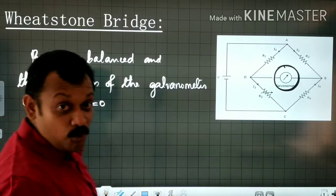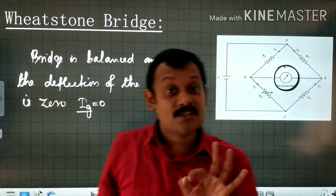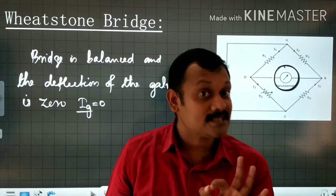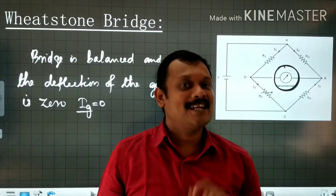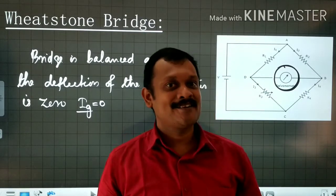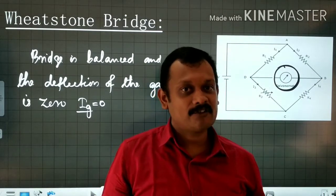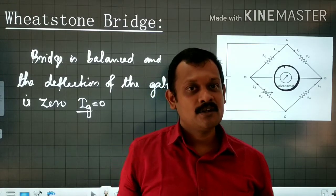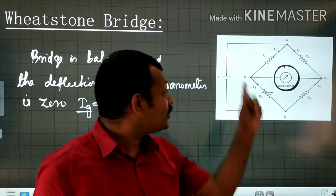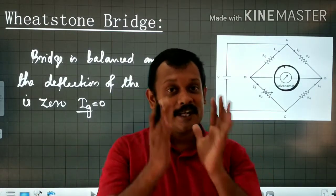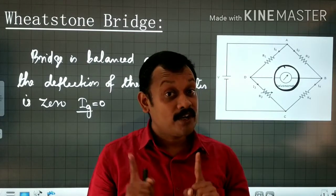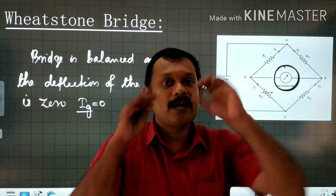Ig — what does Ig stand for? The current in the galvanometer. Understand, please, that the galvanometer is a device used to detect the presence of electric current. When the current through the galvanometer is zero, the galvanometer will not deflect.